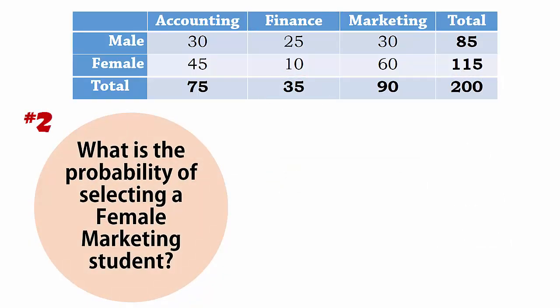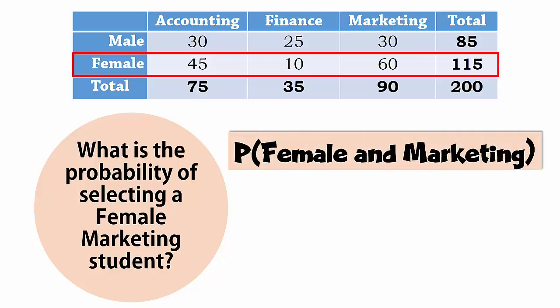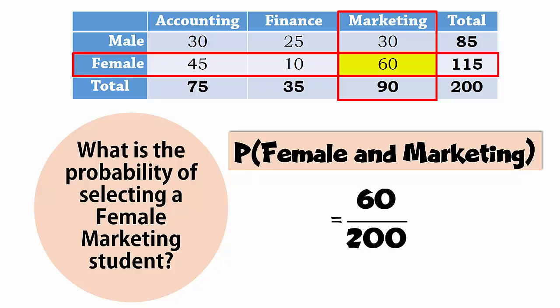Number 2: What is the probability of selecting a female marketing student? This means that the student is female and majors in marketing. From the table, we can see that there are 60 students who are female and also in marketing. Therefore, the probability is 60 over 200, which gives 0.3.